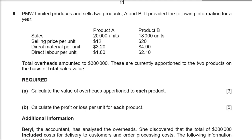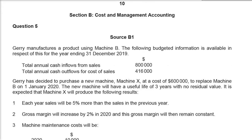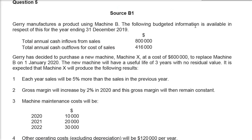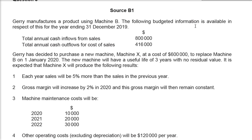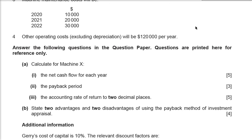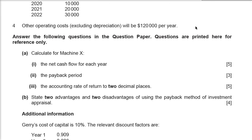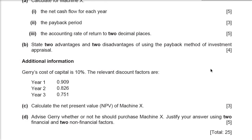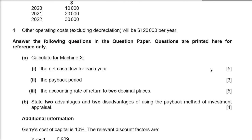We are expecting an NPV calculation question this time. Question number five would be about NPV, payback period, ARR etc. This is from the insert of May/June 19, paper 32. Kindly go through this question on NPV etc.